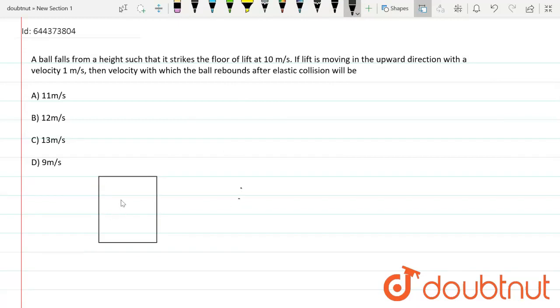which falls from this object, which falls on the surface with speed 10 meter per second and the lift is moving upwards with velocity 1 meter per second. So this is the initial situation of the system.